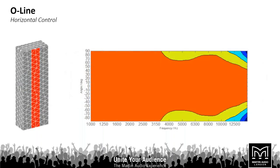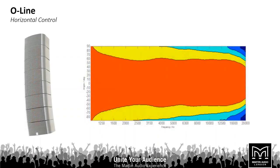Looking at the horizontal control of the array — this plot here is a mathematical model using boundary element techniques with a fairly common driver layout in a column loudspeaker, with a vertical array of direct-radiation tweeters mounted in front of the low-frequency units. We can see how the horizontal beam width is poorly controlled: very wide below the crossover point around 3.2 kHz and really inconsistent above it. By contrast, the physical arrangement of the O-Line drive units results in far better control and a more consistent beam width right through its operating band.